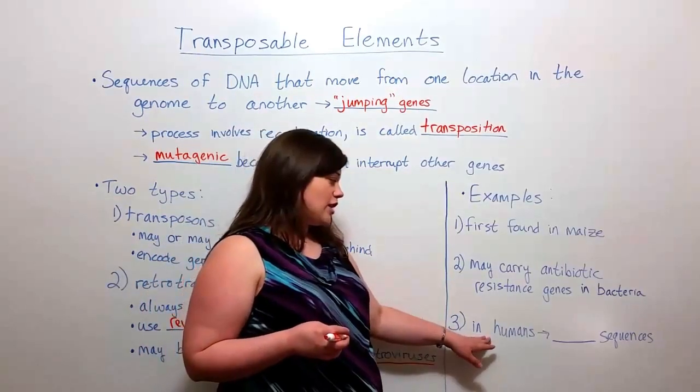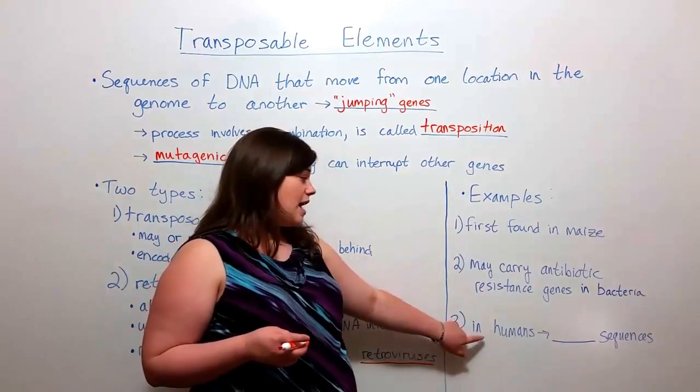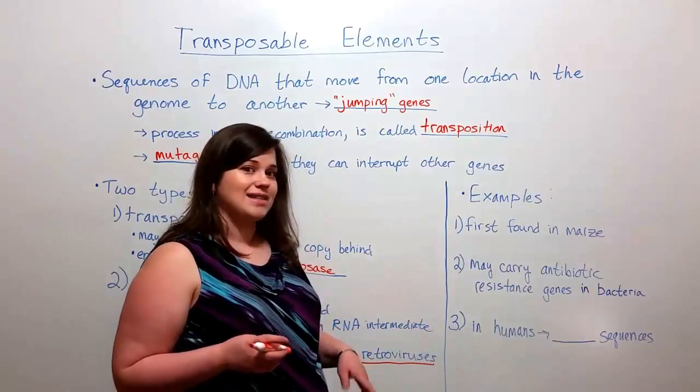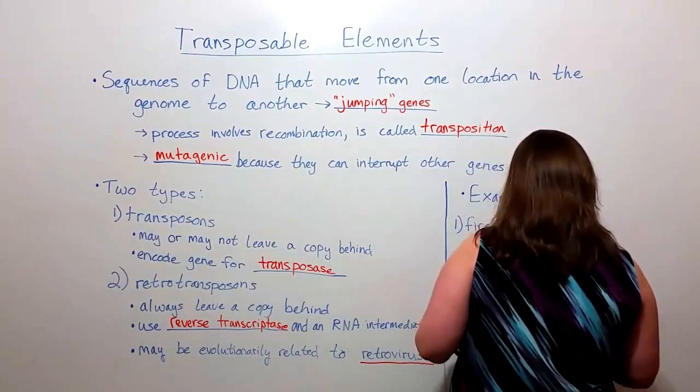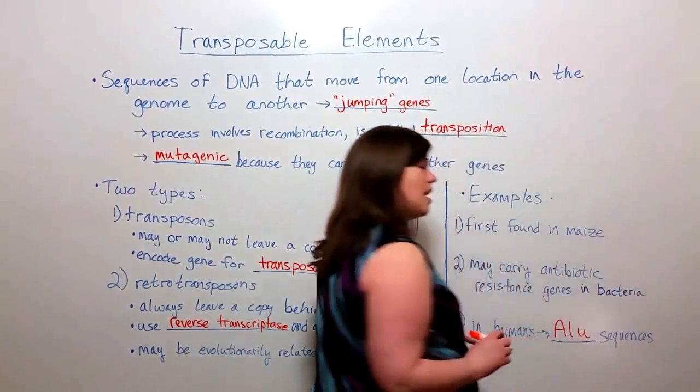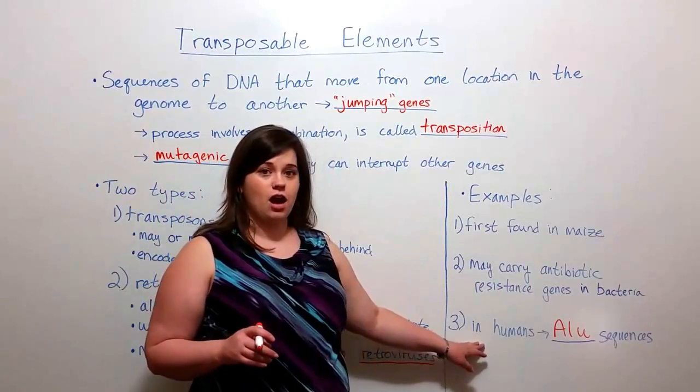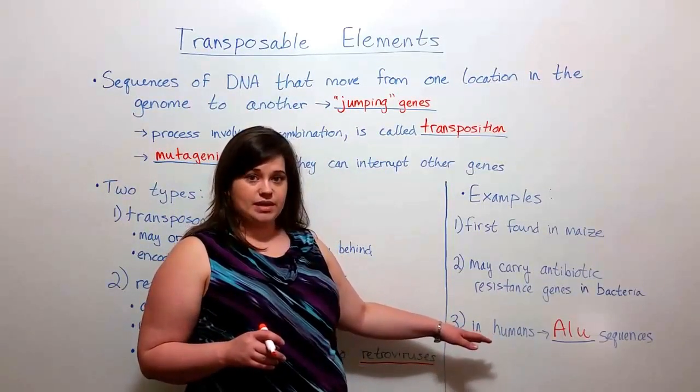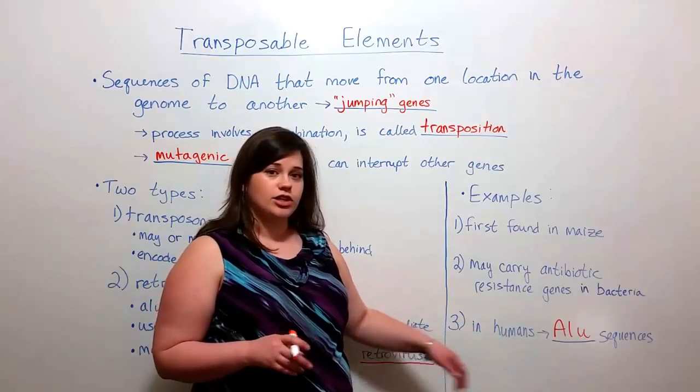And finally, these transposable elements, they're found in many different organisms, including humans. The most common type in humans are known as ALU sequences. And ALU sequences are actually very common in the human genome. There are many copies of them, and they can create some health issues.